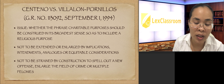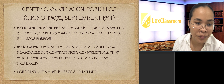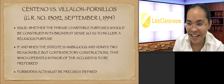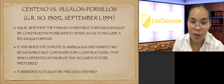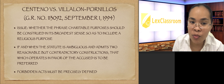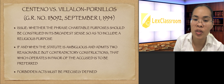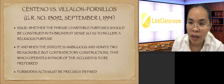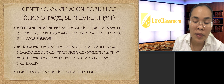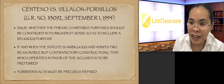Enlarging the scope of 'charitable purpose' would create new offenses or multiply felonies which were not within the intention of the legislature. The Supreme Court concluded that when a statute is ambiguous and admits two reasonable but contradicting constructions, that construction which favors the accused is to be preferred.